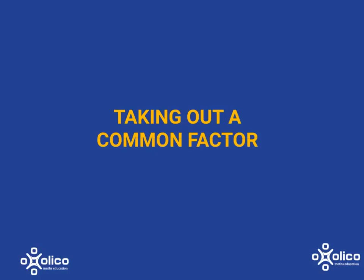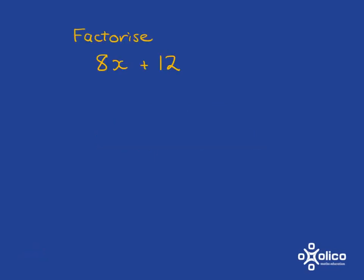So now let's look fully at how you factorise by taking out a common factor. So if you asked to factorise 8x plus 12,